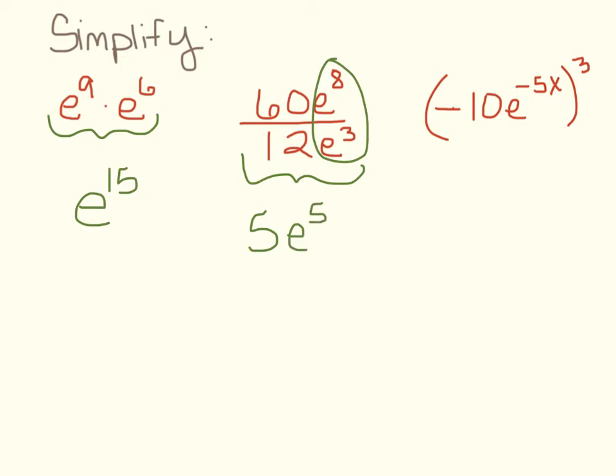Or if I had negative 10E to the negative 5X all to the 3rd power, we would raise the negative 10 to the 3rd power and get negative 1,000. And then E to the negative 5X to the 3rd power, we would get E to the negative 15X.